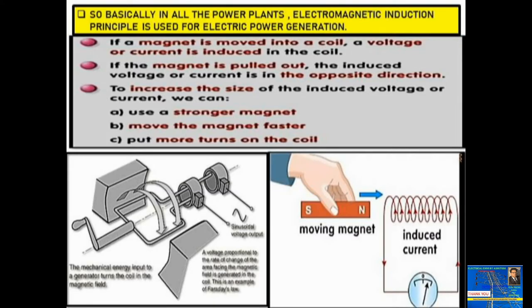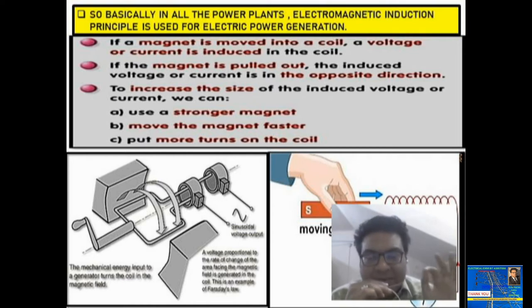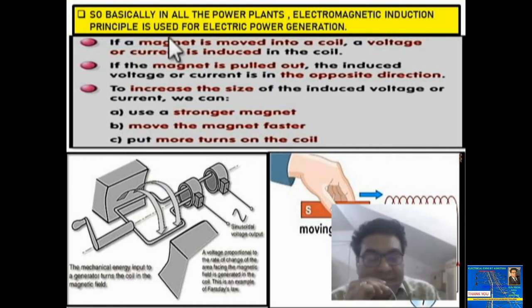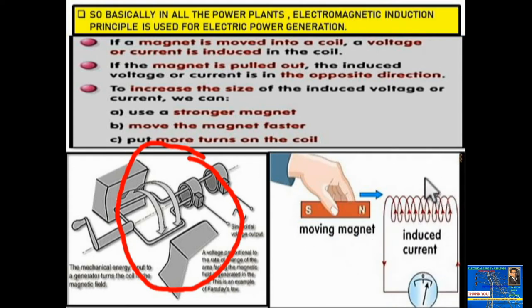According to Faraday's law of electromagnetic induction, there are two ways to induce EMF in a coil. In case number one, this is the coil and this is the magnet, with a galvanometer or ammeter connected across the coil. If a magnet is moved into a coil, a voltage or current is induced in the coil.